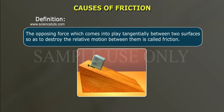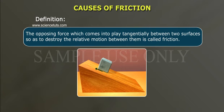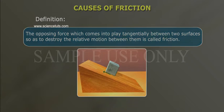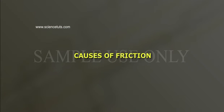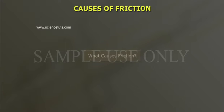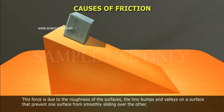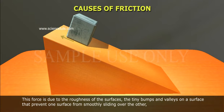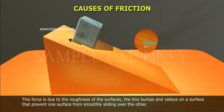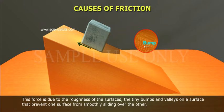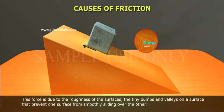The opposing force which comes into play tangentially between two surfaces, so as to destroy the relative motion between them, is called friction. What causes friction?